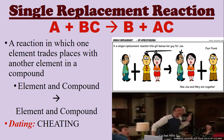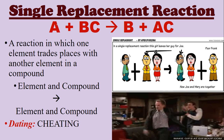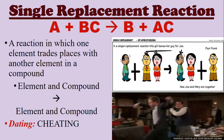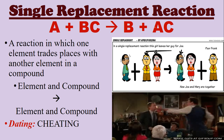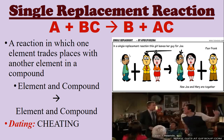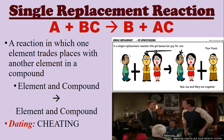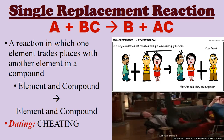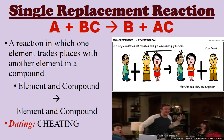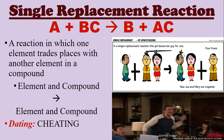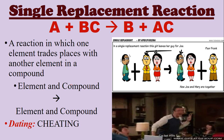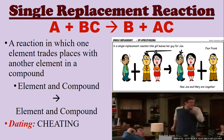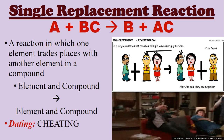A single replacement reaction is when you have A plus the compound BC, and A and B switch spots — so B ends up single and A and C are now a compound. One element trades places with another element in a compound, so you have an element and a compound on each side of the arrow. Think of it like cheating: B and C are dating, A is on the outside, C starts liking A, and A and C get together, leaving B gone.